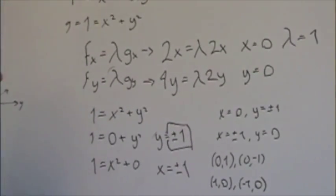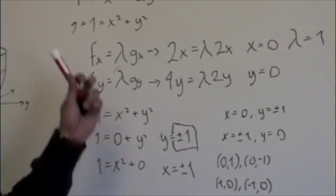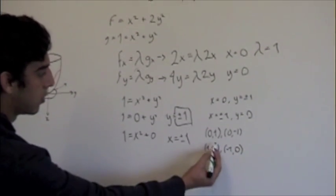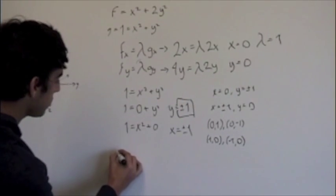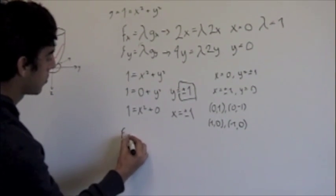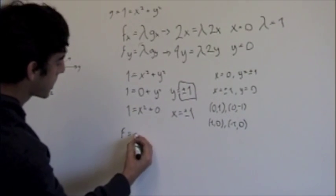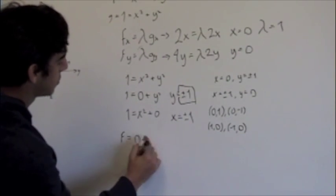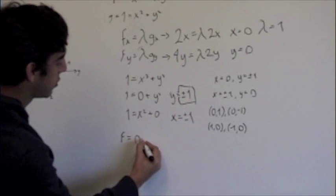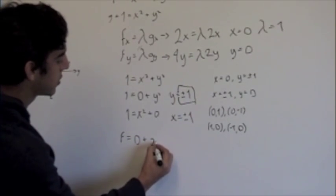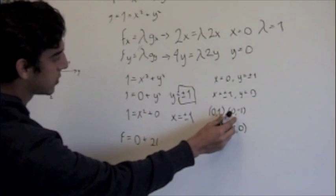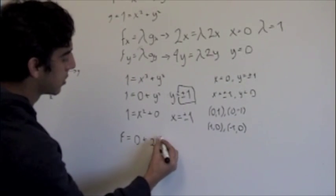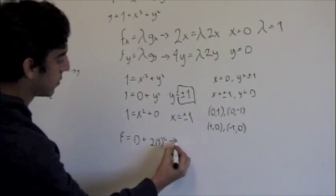Now we have our critical points, we have to evaluate them at the general function f. If we evaluate at (0,1), we'll get 0² plus 2y². In this case y is 1, and when we square either 1 or -1, we get the same, so we can just plug in 1. We'll get 2.